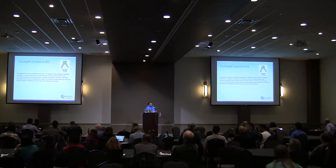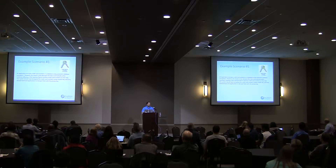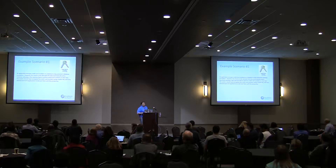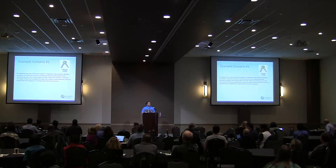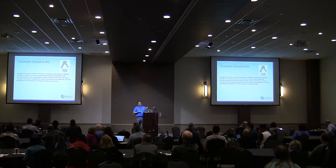Here's an example. The first scenario: we have an application that encrypts credit card numbers in the database using automatic database encryption. Every time we do an insert, it encrypts the data; every time we do a select, it's decrypted automatically. Which is nice — the database is doing all this for us. But it also means that if there's a SQL injection flaw like we learned about earlier today, the database will automatically decrypt the information as we retrieve it, so those credit card numbers come back decrypted.